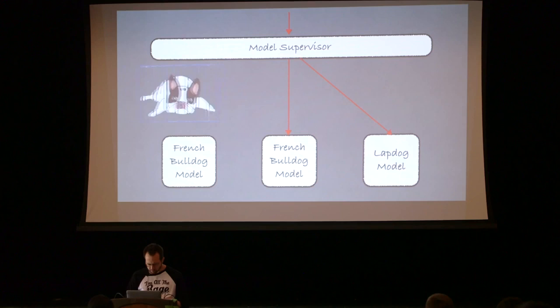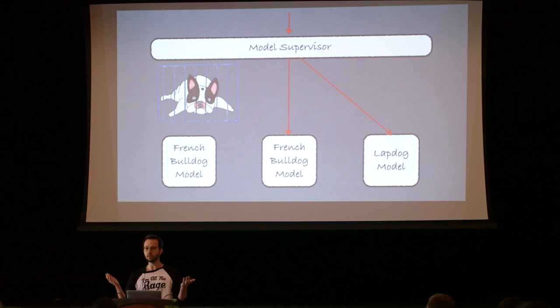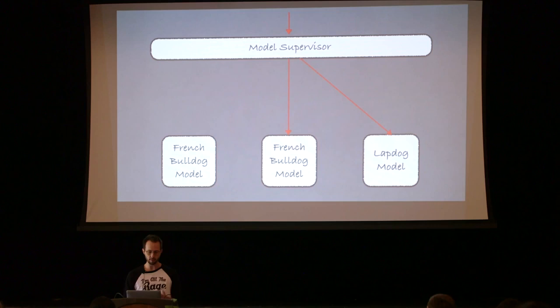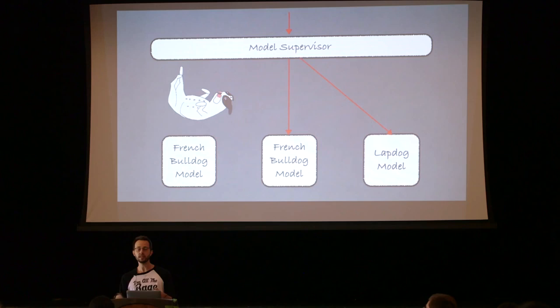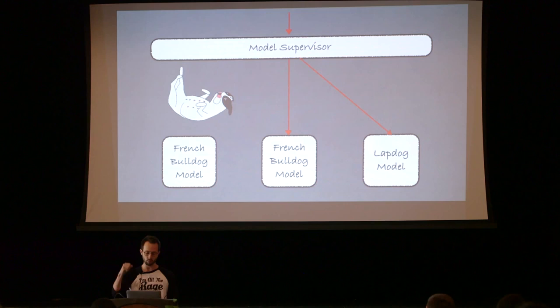We've contained that failure — this service no longer receives traffic and can be safely killed. In no sense did it propagate to any other models. This gives us enormous resilience. That bad French bulldog model never threw exceptions; it didn't fail as software — it failed as a machine learning model. But we still have resilience, in that we have a mechanism to encode supervision — what is the actual responsible component for understanding what constitutes the operation of a successful model.